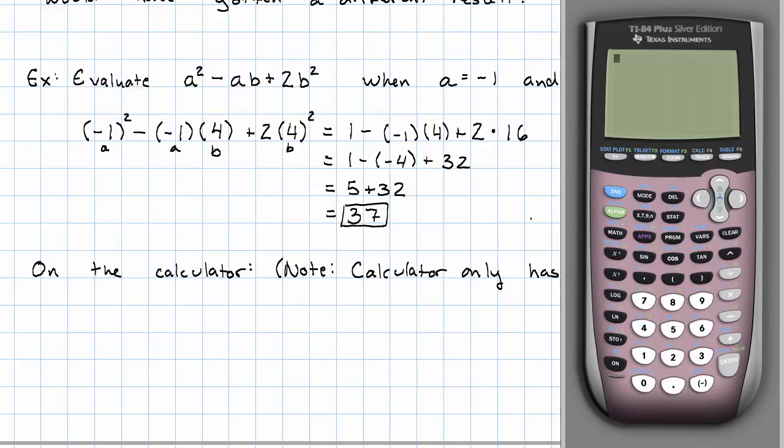So we're going to take negative 1 and we're going to hit the store key and store it to the letter A. So I enter negative 1, I hit the store key. What that puts on the screen is a little arrow, and then alpha and the key with a little A over it. That's put the value of negative 1 in the letter A.